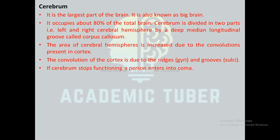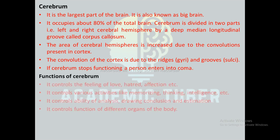The area of the cerebral hemisphere is increased due to convolutions present in the cortex. If the cerebrum is damaged, a person enters into a coma. Functions of the cerebrum include: controlling feelings of love, hatred, and affection; memorizing, thinking, and intelligence; analysis, drawing conclusions, and estimation; and controlling the functions of different organs of the body.